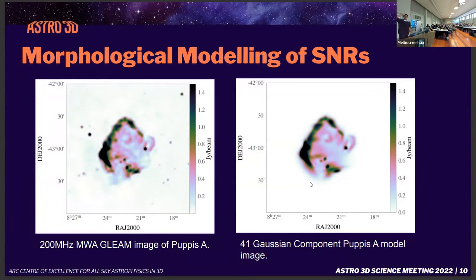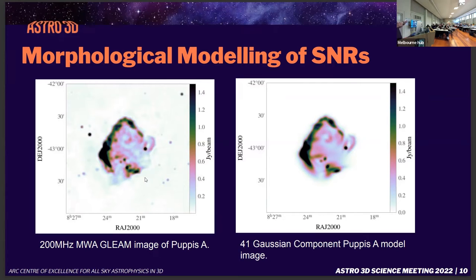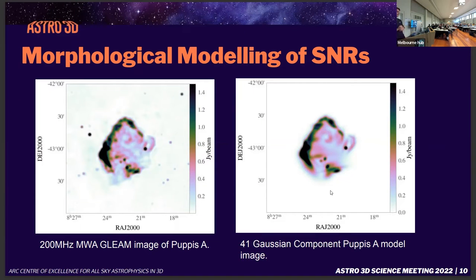Here's an example of one of these supernova remnants — this one is called Puppis A. It's one of the brightest supernova remnants in the galactic plane, roughly a degree in size. This is a GLEAM image; GLEAM was an all-sky survey conducted with the MWA. I'm not going to go into too much detail about the morphological modeling process, but essentially what I did was take the brightest and biggest supernova remnants — roughly a sample of about 70 — and perform image processing techniques using the Python package scikit-image, basically peak detection. I then fit 2D Gaussians to these peaks to retrieve this model shown on the right, which is a 41-Gaussian component model of this particular supernova remnant, accurate to about 1–10% error for all of the supernova remnants that I fit.